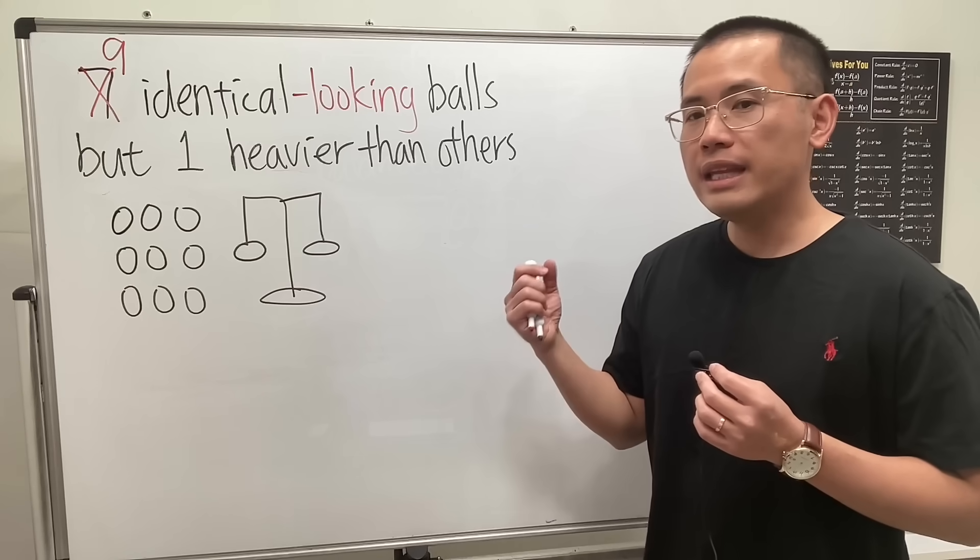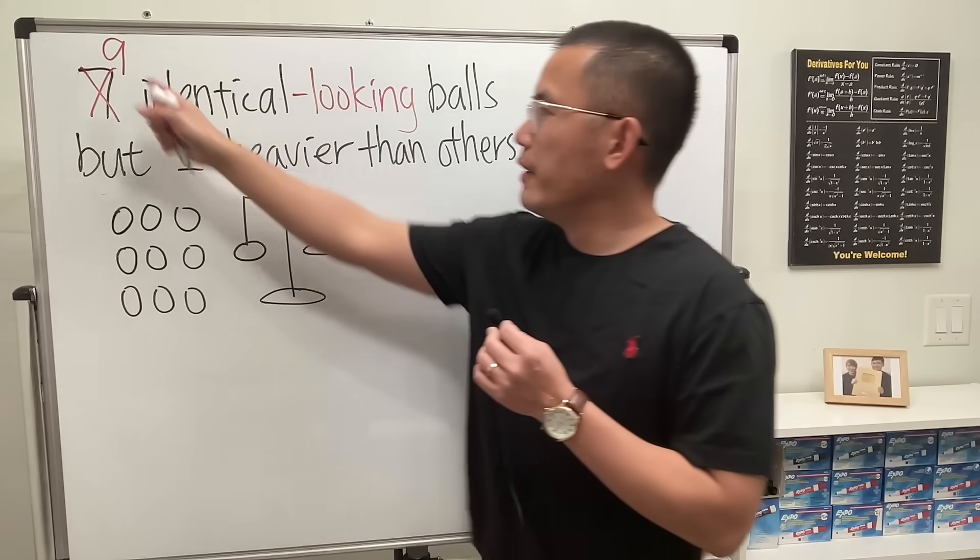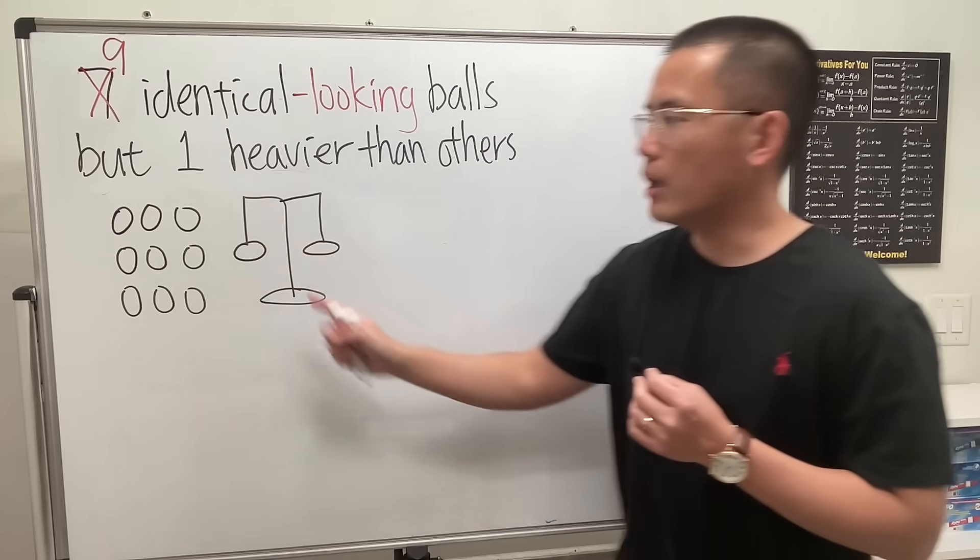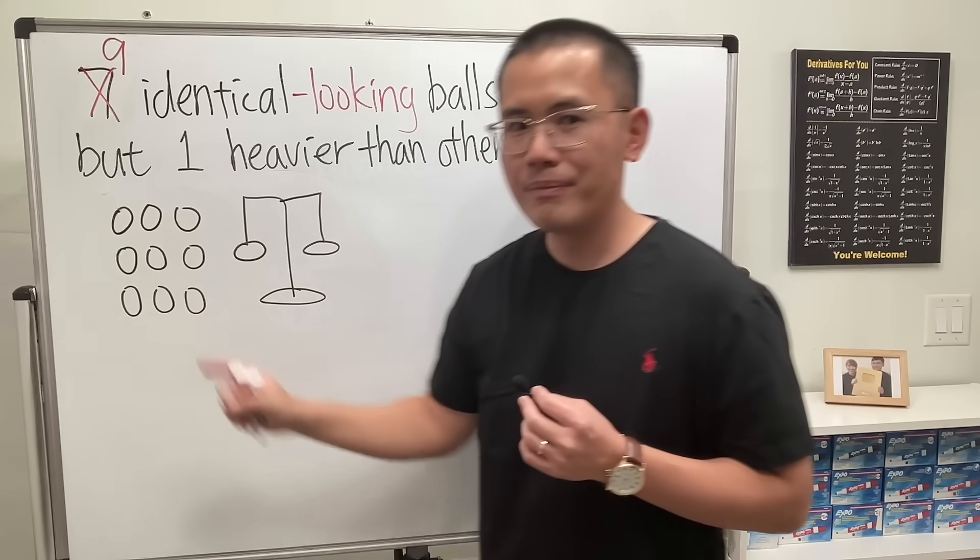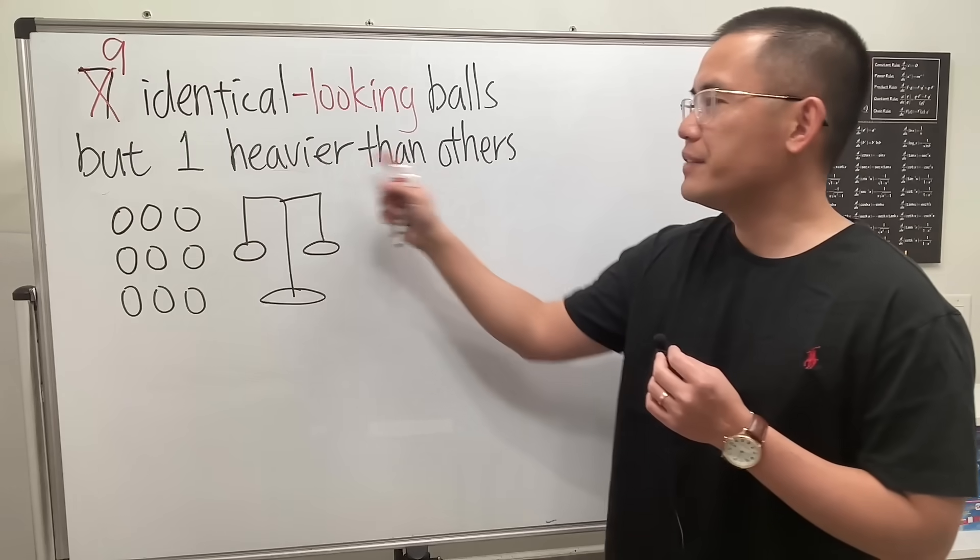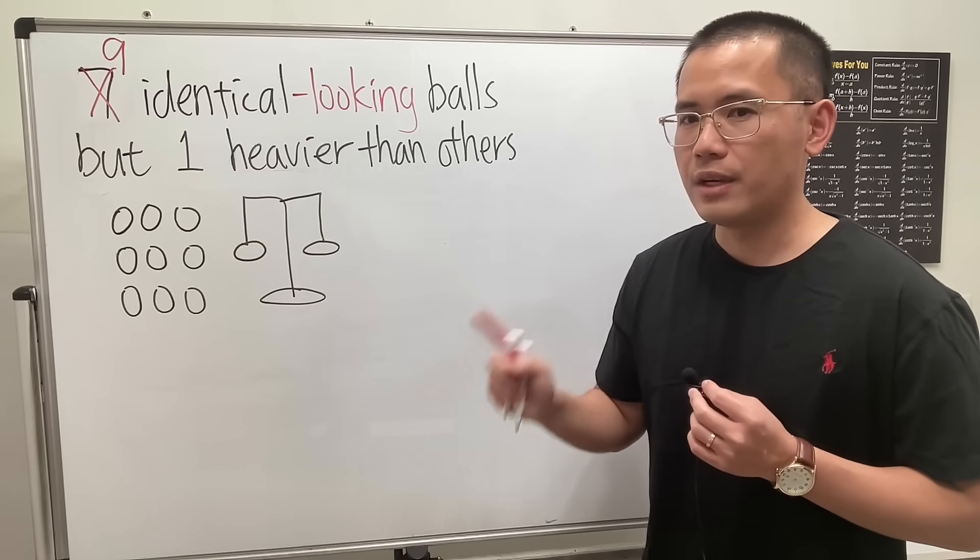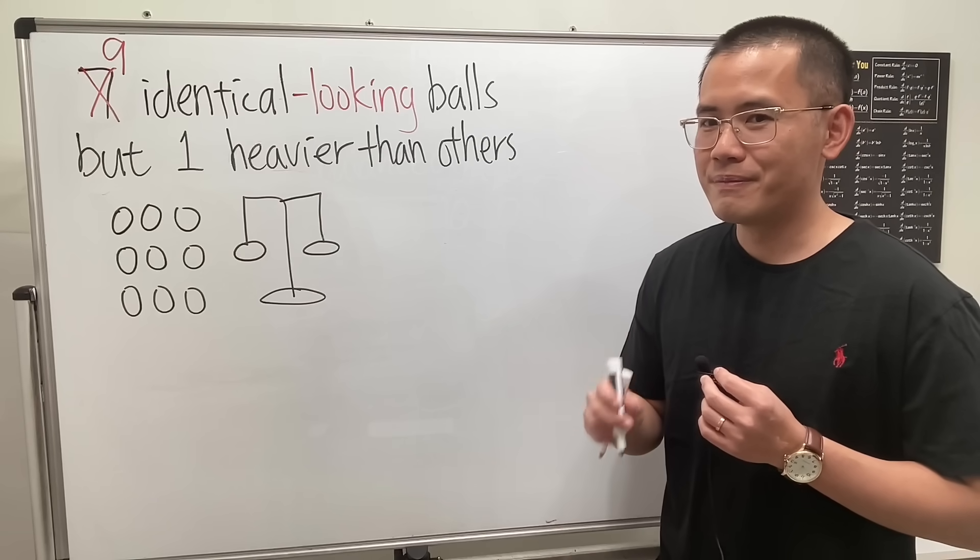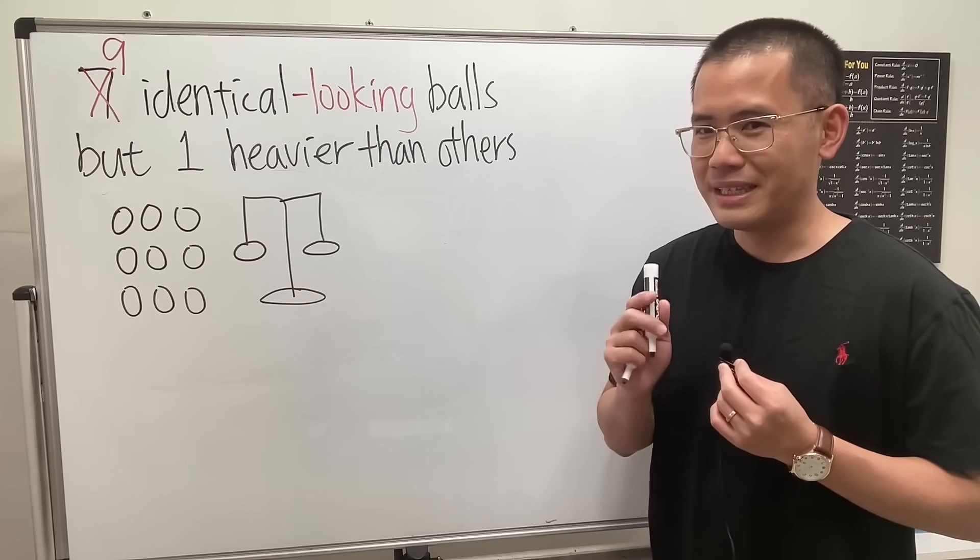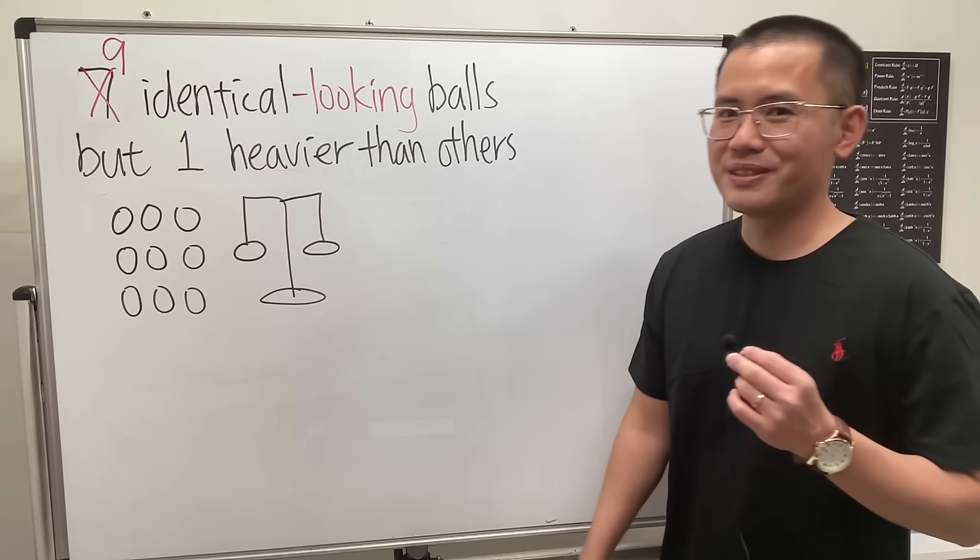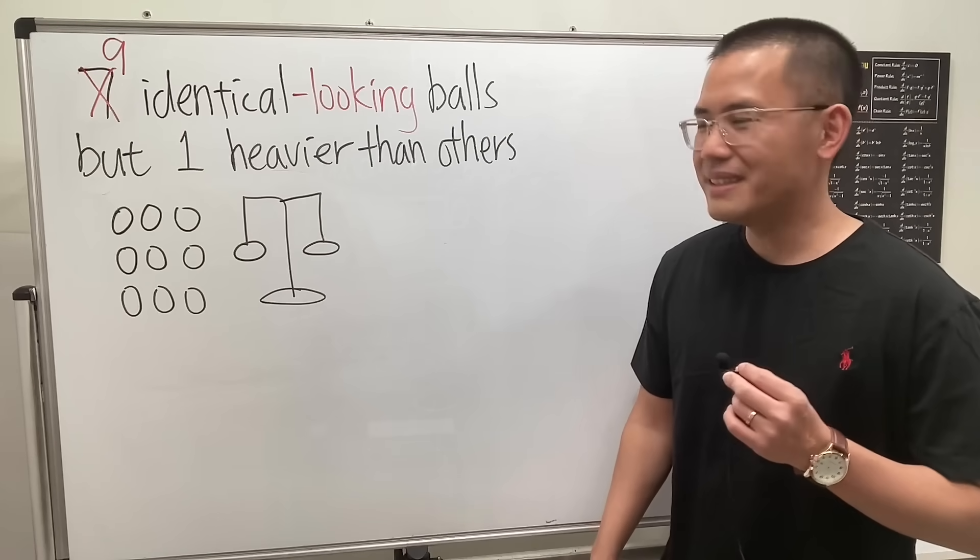The question is actually this: we have nine identical-looking balls, meaning all the balls look the same, but one of them is heavier than the others. Our goal is to use the scale twice to figure out the heavier ball. It's actually possible. If you haven't already, please pause the video and try this first before you watch the solution.